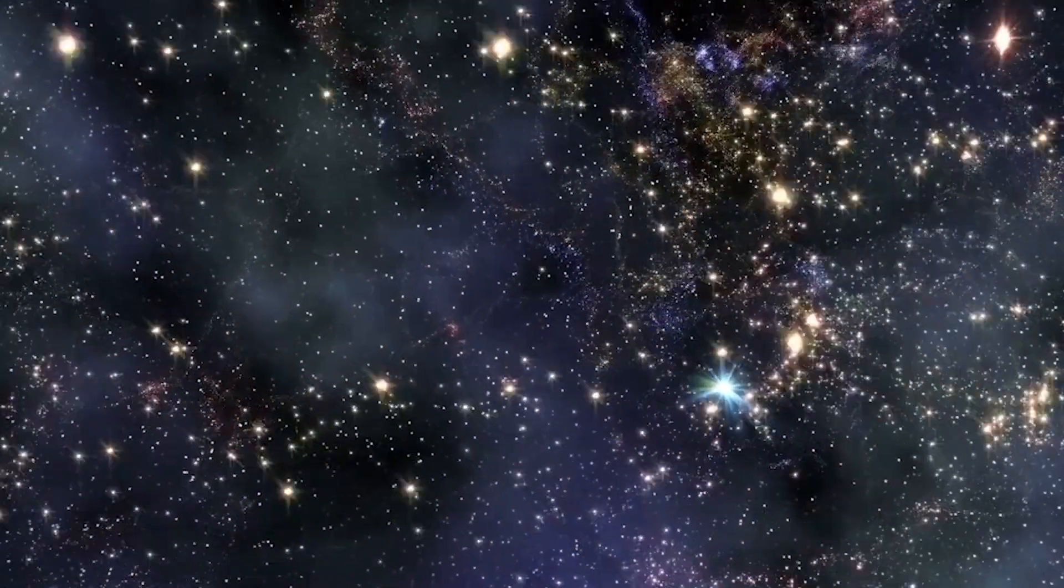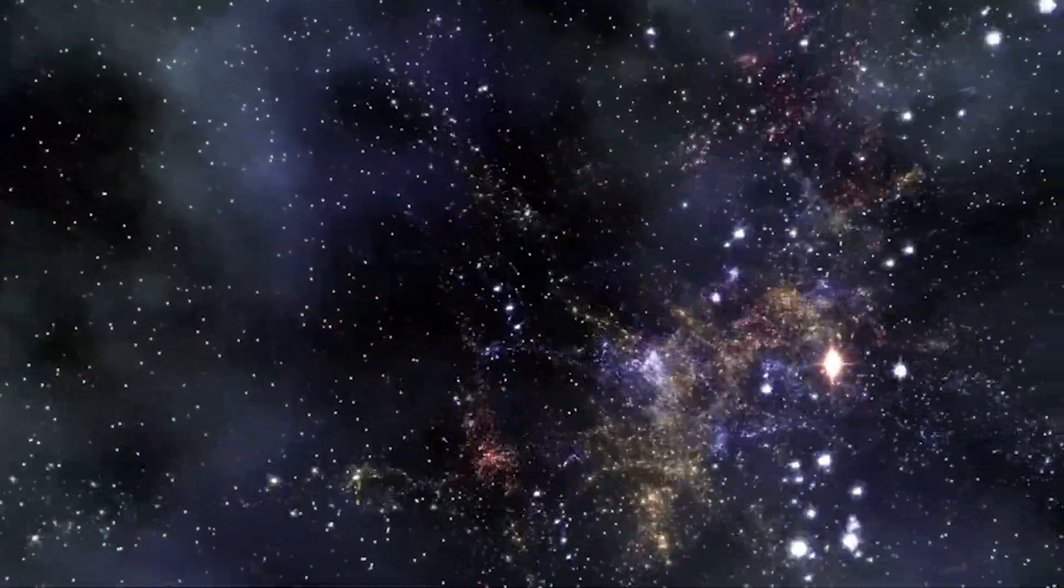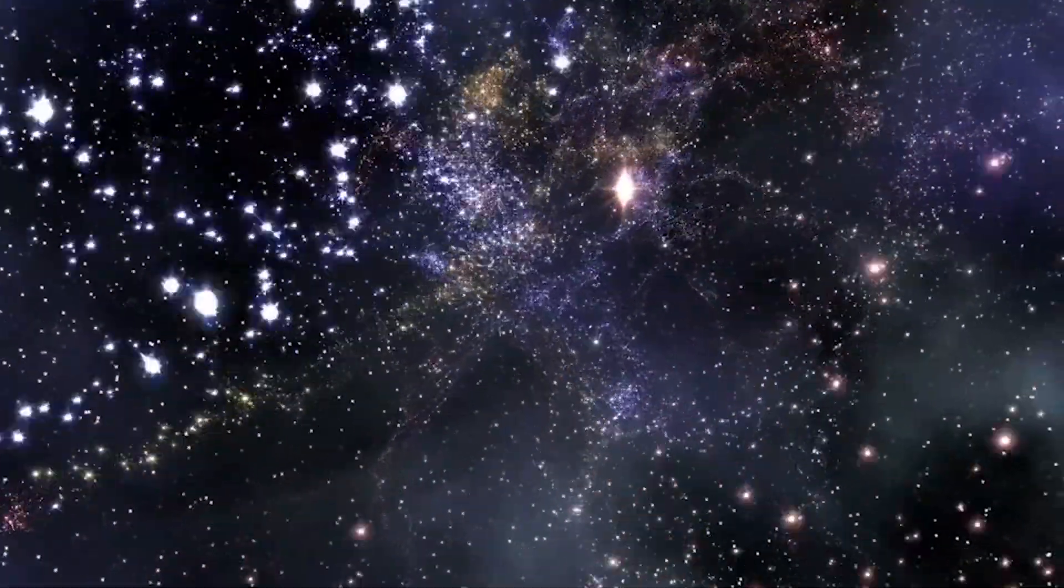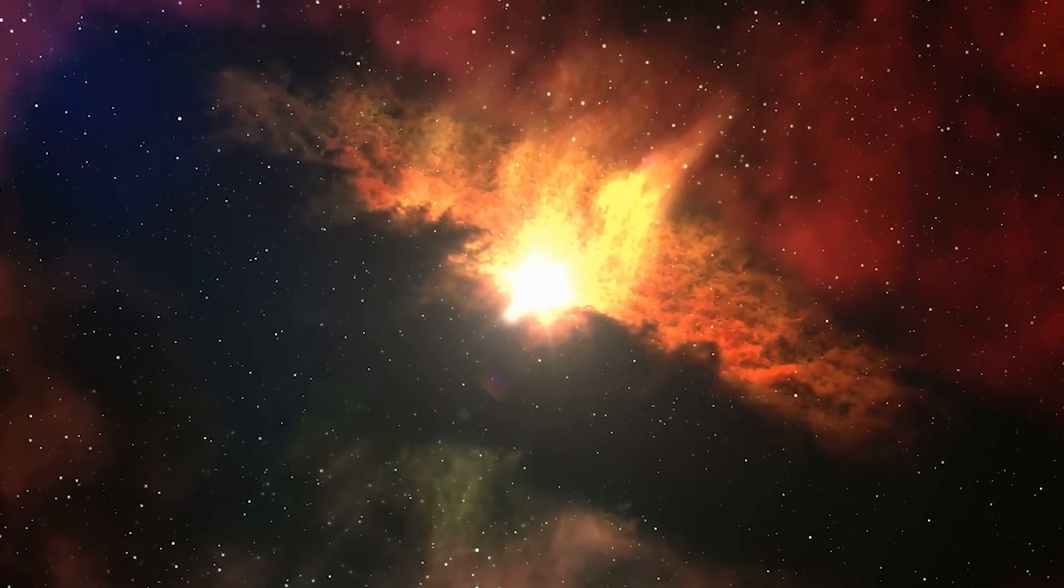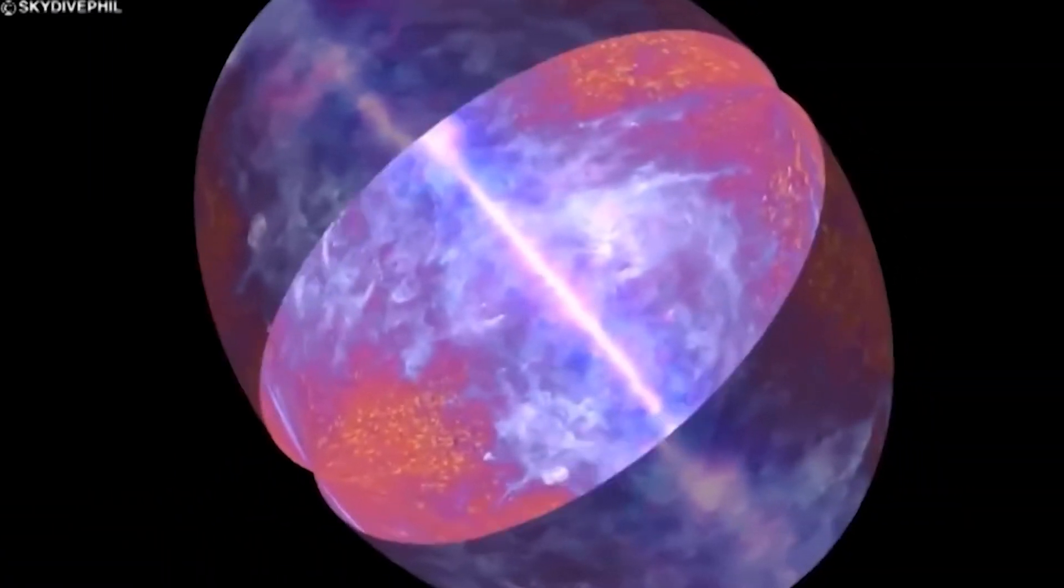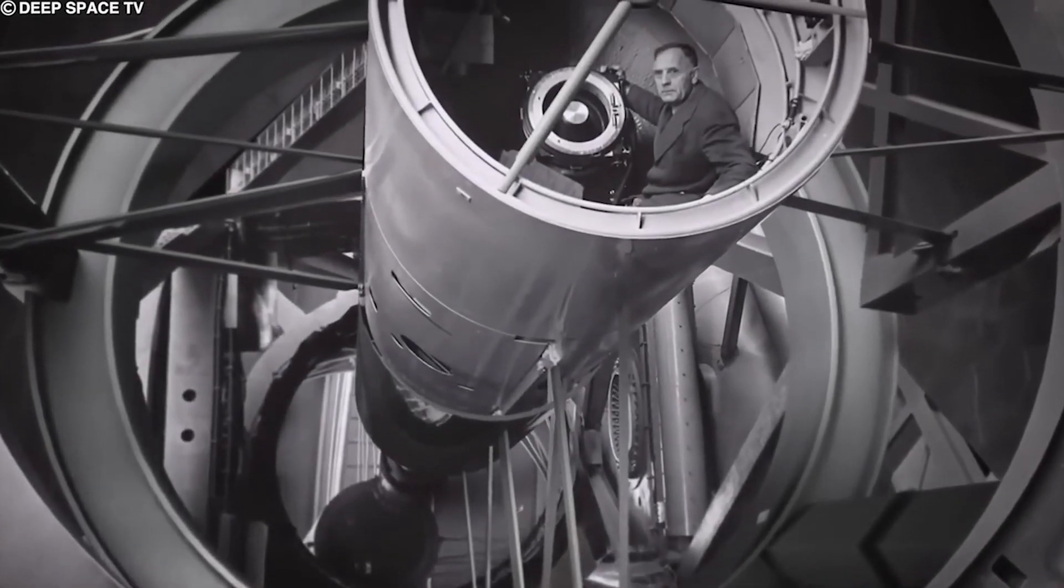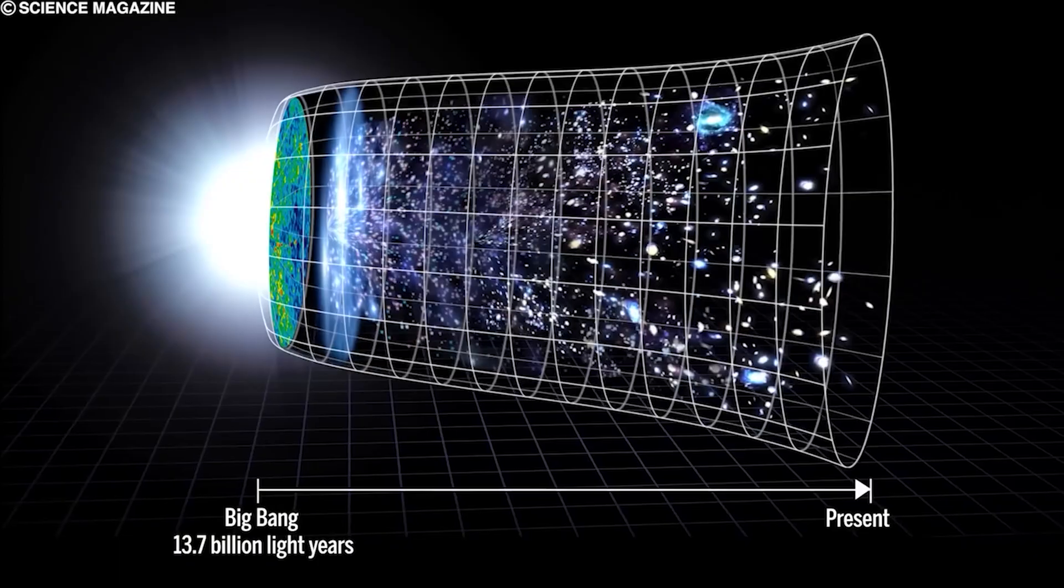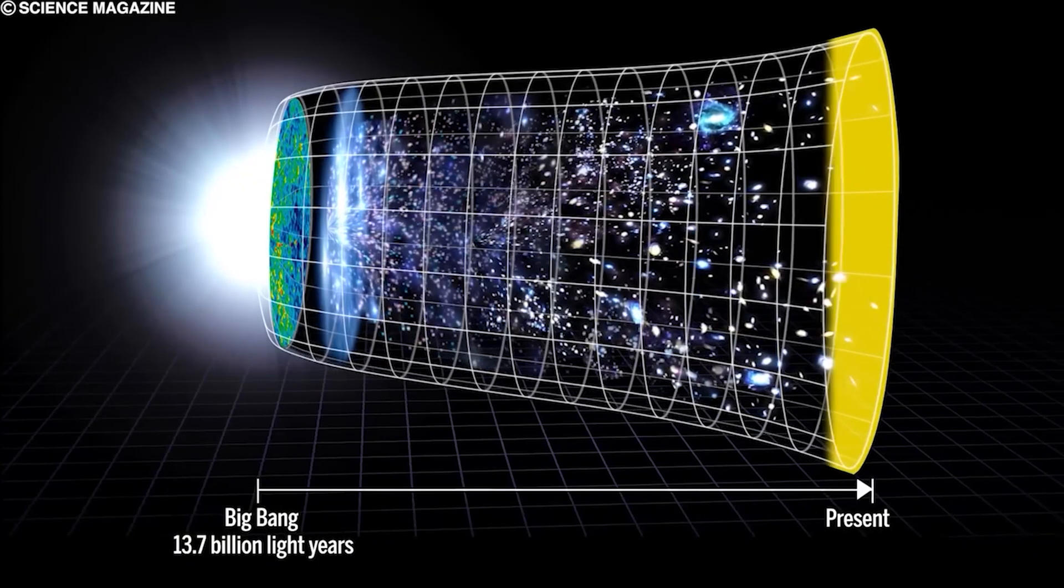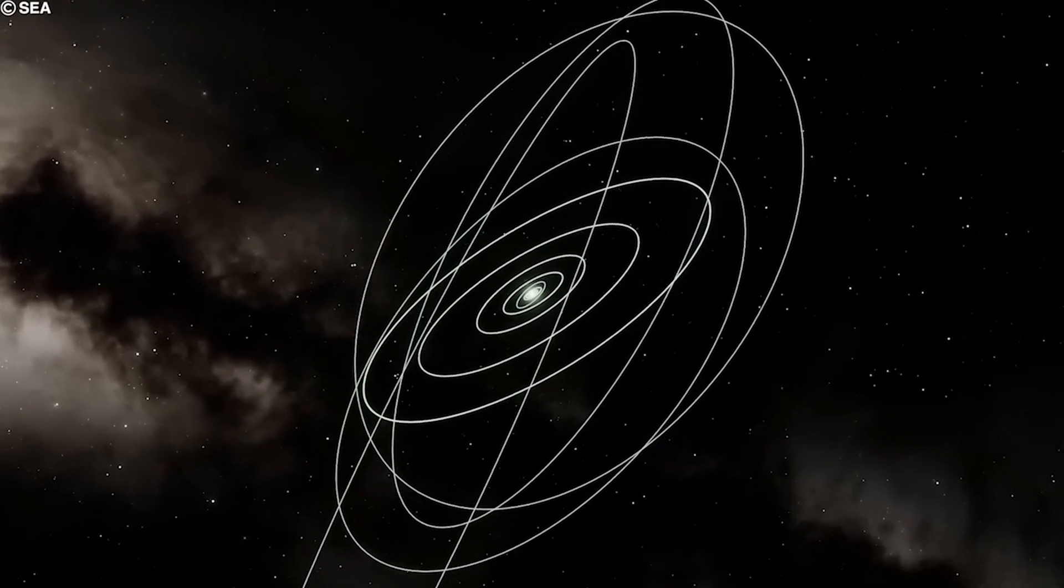This observable region encompasses all the celestial bodies and phenomena that telescopes have detected so far, including quarks, quasars, stars, planets, nebulae, black holes, and more. Nonetheless, the observable universe is continually expanding, while remaining finite in size, often referred to as the Hubble volume, in honor of the telescope that provided us with the farthest views to date. We are restricted by this boundary, unable to see beyond it, making it the only universe with which we can interact.